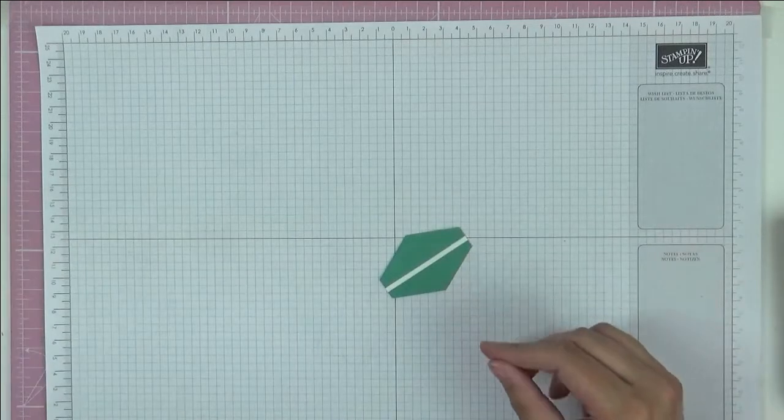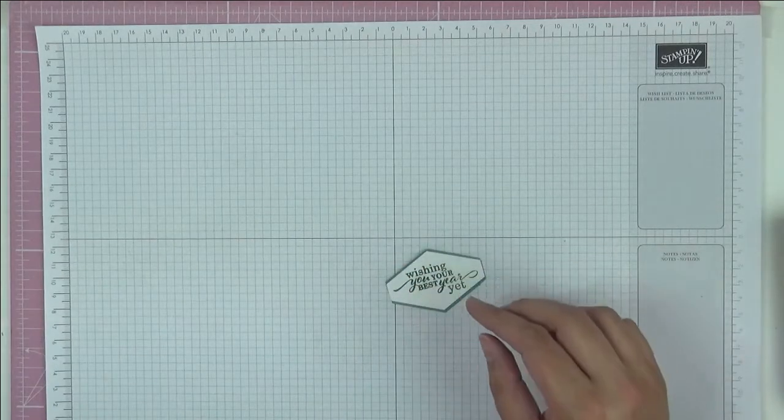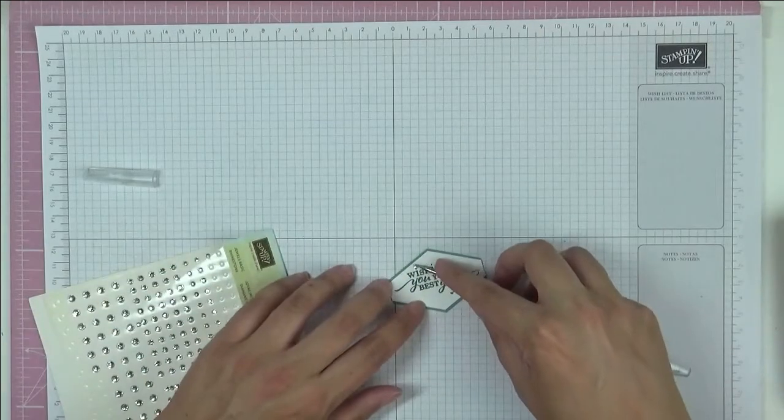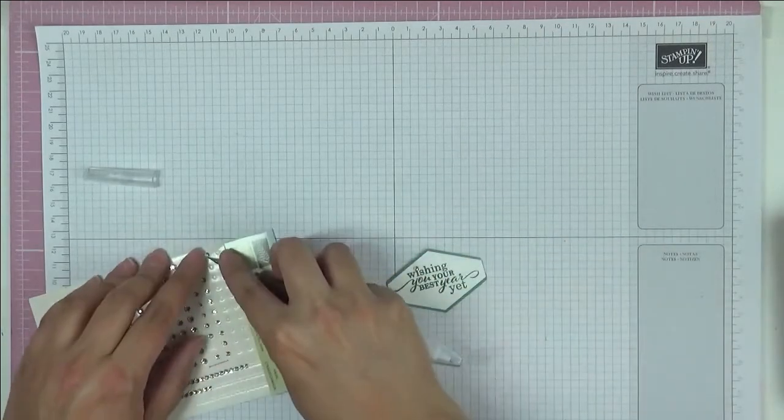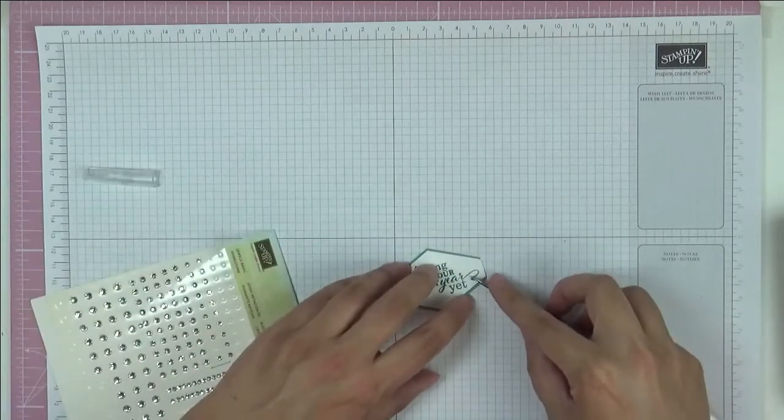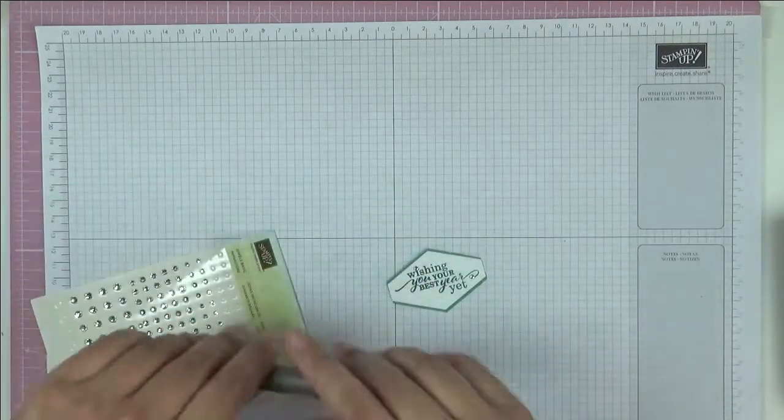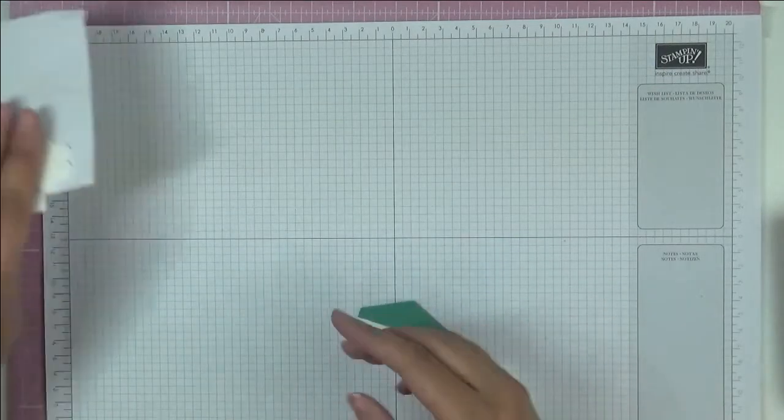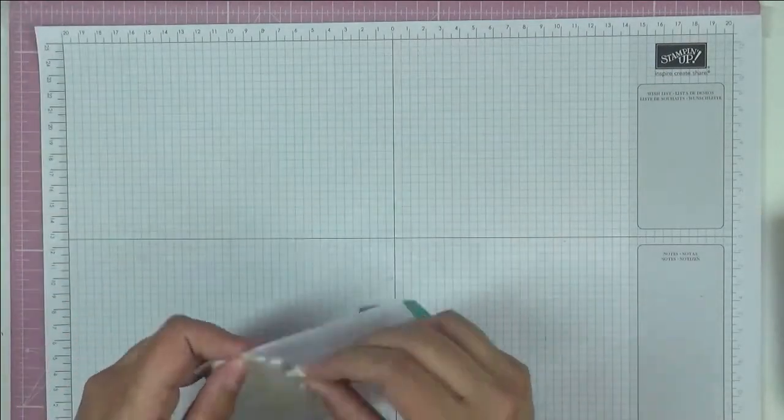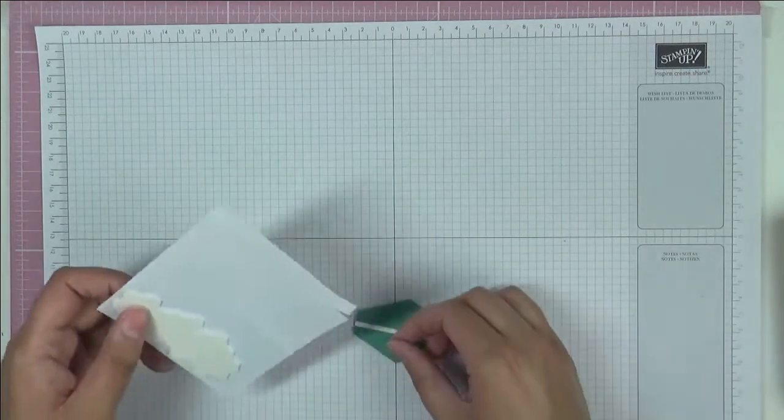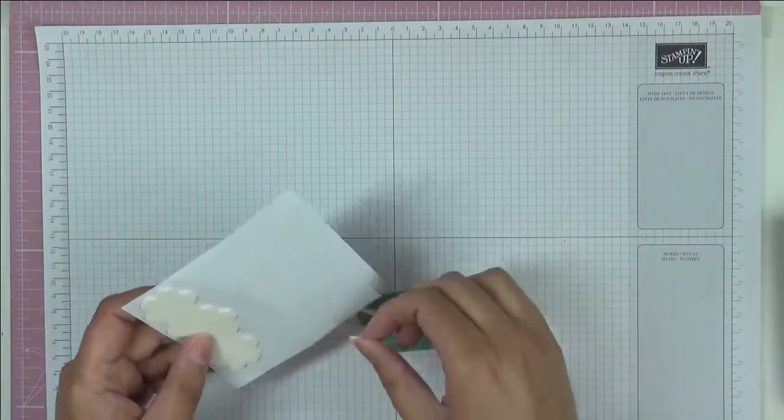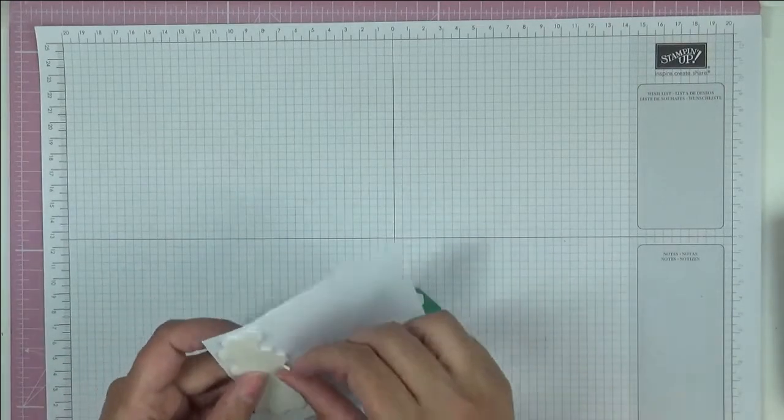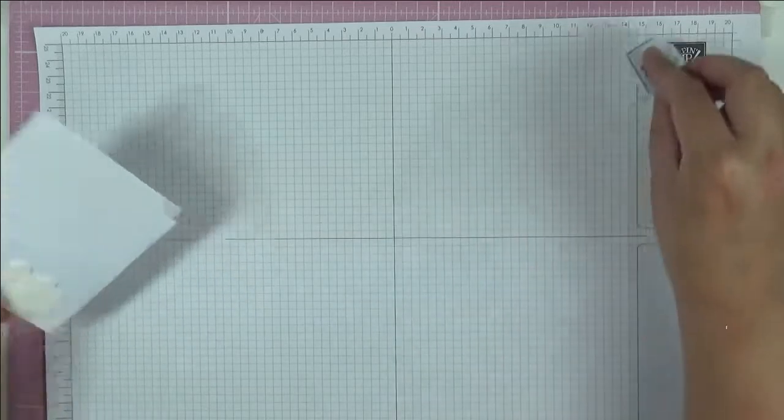And then on the front I'm going to put some rhinestones. I'm going to put one here on the wishing, on the dot, and another one just there. Let's get rid of that. Then on the back I'm going to put some dimensionals just like that, so that's ready to go.